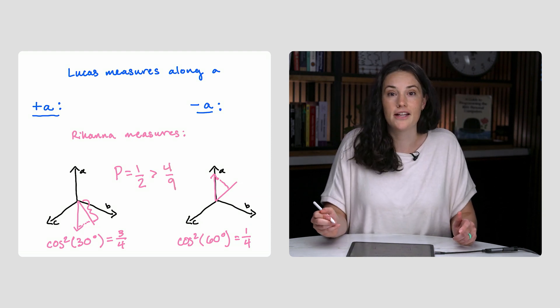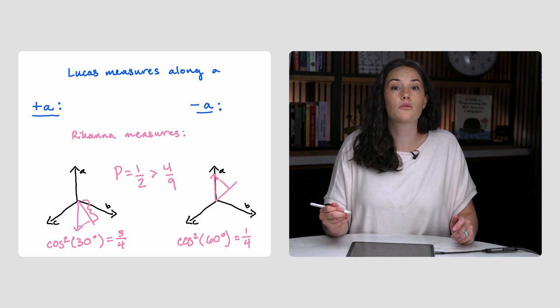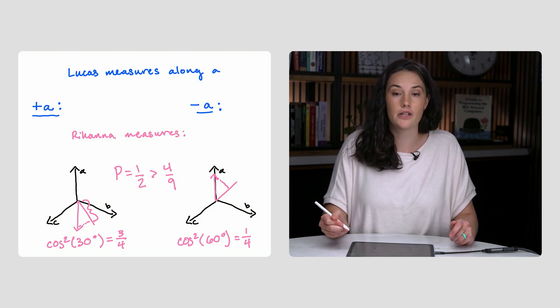So Bell's inequality is violated. That means that as long as the rules of quantum mechanics hold, hidden variables are impossible.